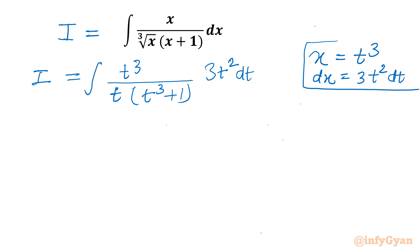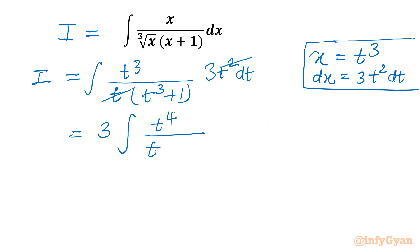Now I can cancel one t from the numerator and denominator. So it will become 3 as a constant outside, and it will be t to the power 4 dt over t cubed plus 1. Now I will add and subtract t from the numerator.